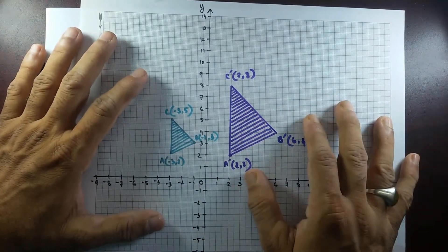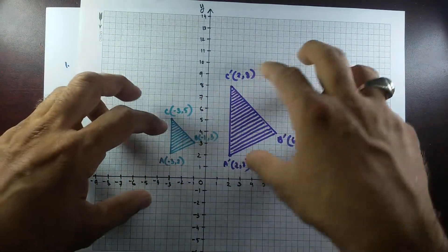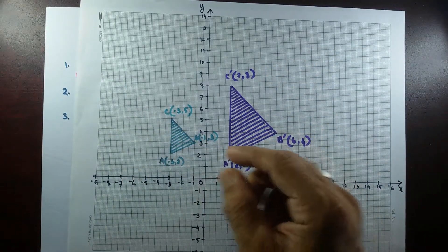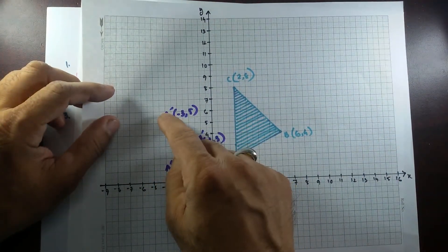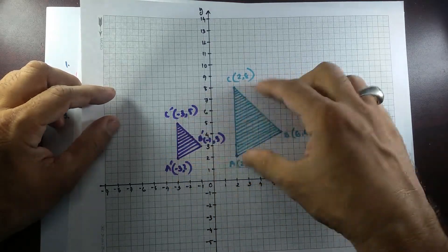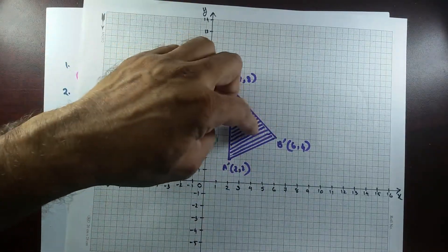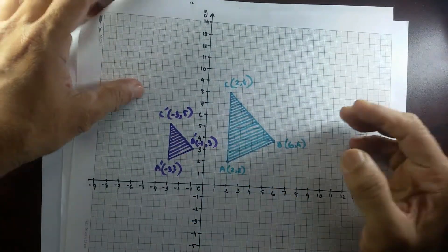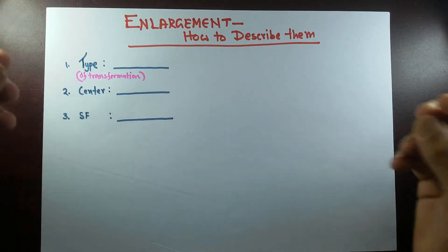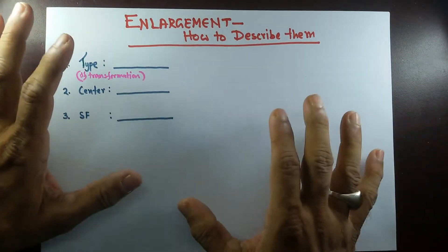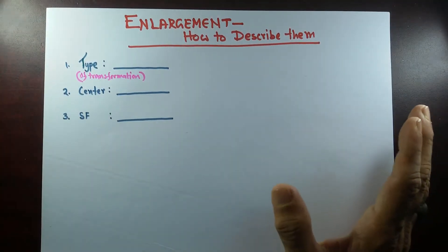We'll talk about the exception of scale factor negative 1 later in this video. When an object gets either bigger or smaller, we call it enlargement. In practical life, when something gets bigger we say enlargement, but if it gets smaller we call it something else. In maths, however, both cases are called enlargement — the only difference is the scale factor.